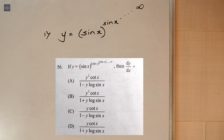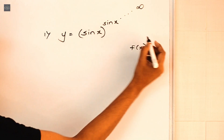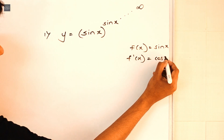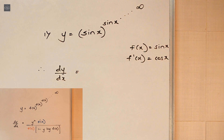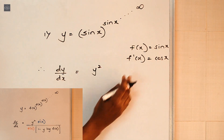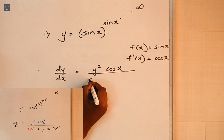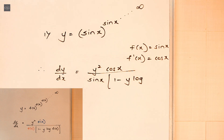Alright guys, here we have the first question: y equals sinx raised to sinx raised to sinx, dot dot dot, so on till infinity. Let's solve this using our shortcut technique. The function f(x) here is sin x, and f'(x) — its derivative — is cos x. Now applying the shortcut trick: dy/dx equals y squared times f'(x), which is cos x, upon the denominator f(x) which is sin x, times (1 minus y·log f(x)), where f(x) is sin x.